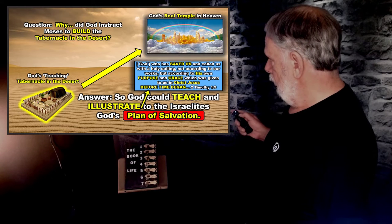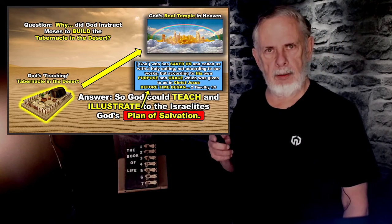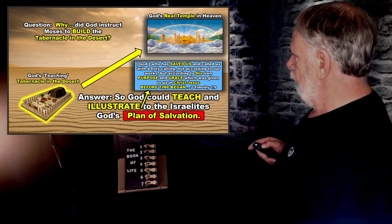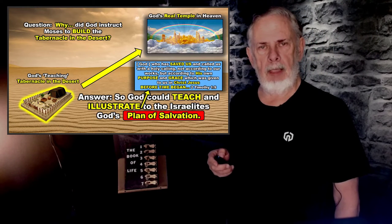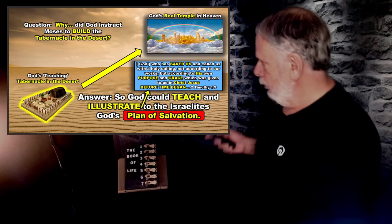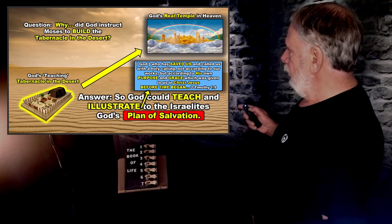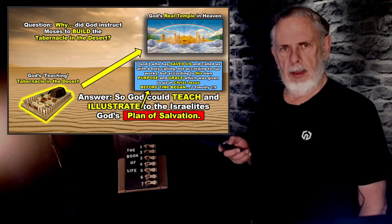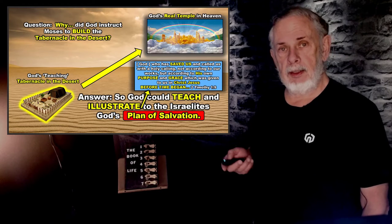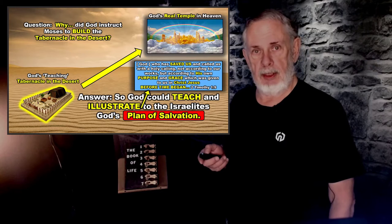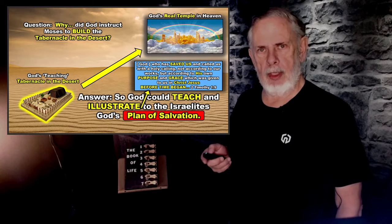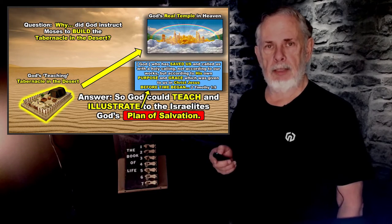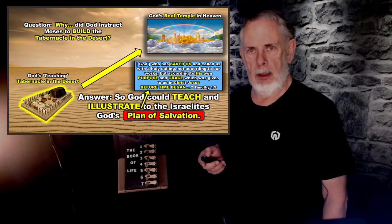When did God give us this? It says 'before time began.' Sometimes we gloss over these words in the Bible, but it's pretty clear that the plan of salvation was put together by God the Father before he even created the universe. That's pretty amazing — every element and everything that has occurred has been thought through by God.